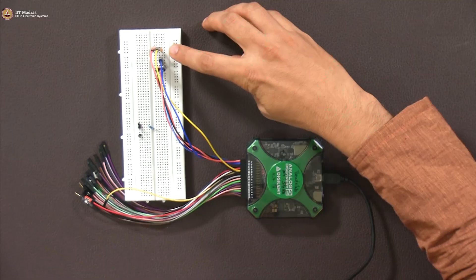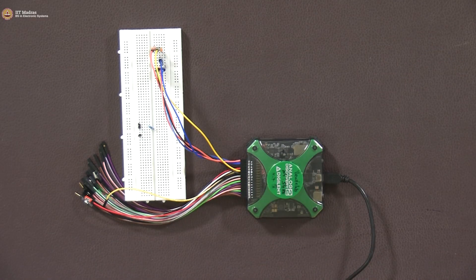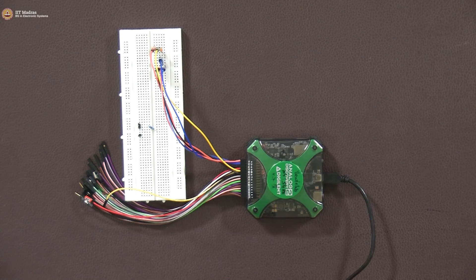So now we are back to our experiment and we have this particular circuit here. There is a capacitor and there is a resistor, and as usual we have our oscilloscope and signal generator with this kit.